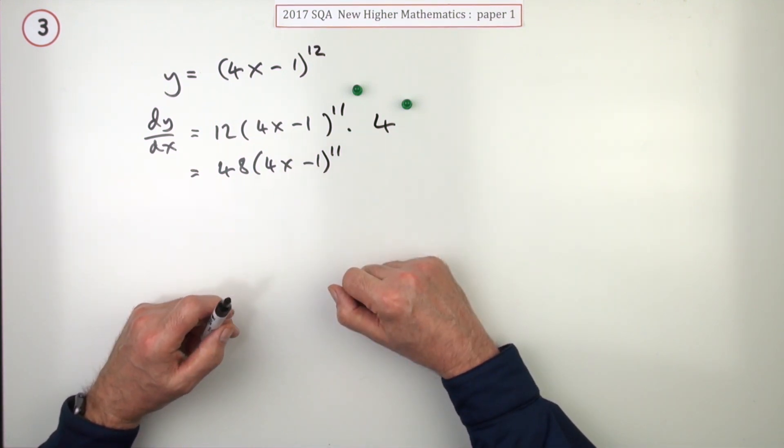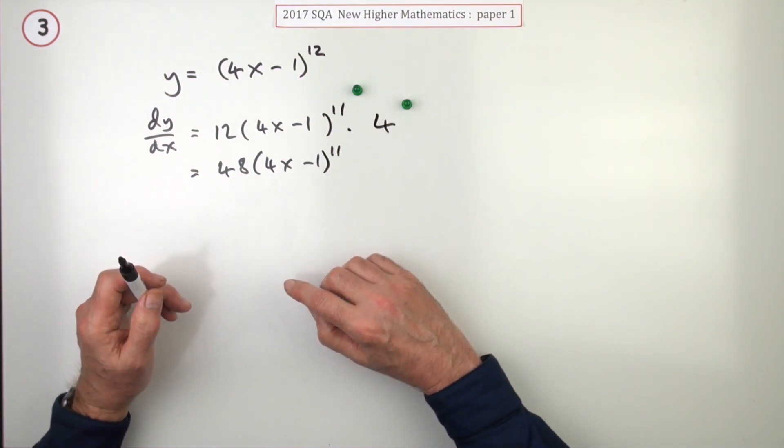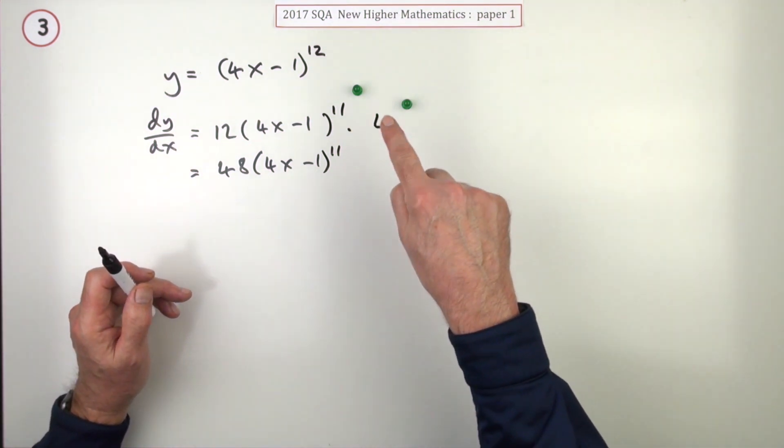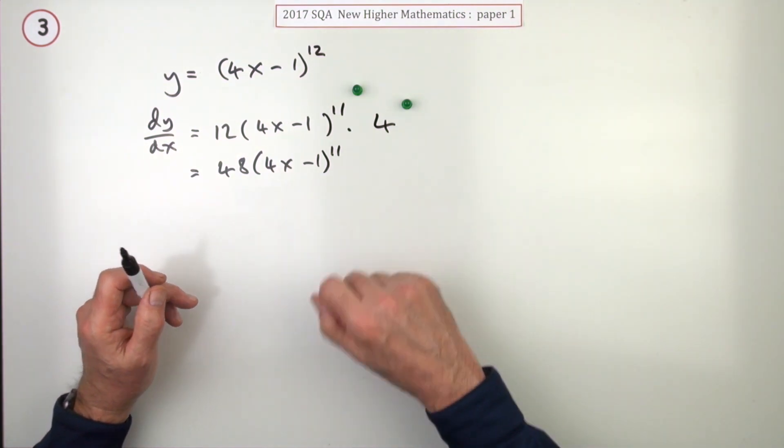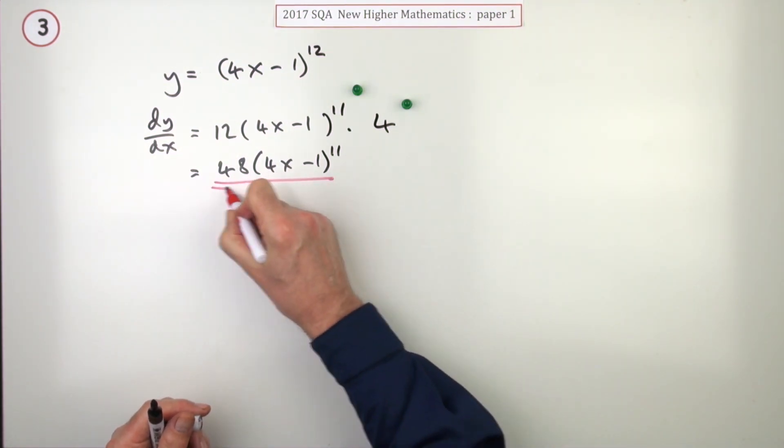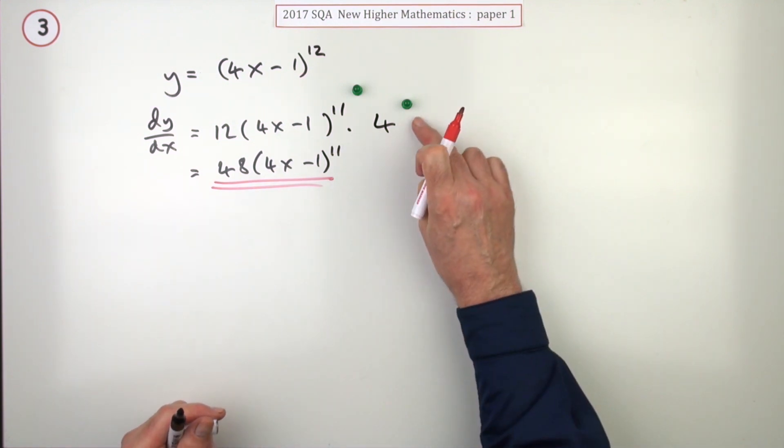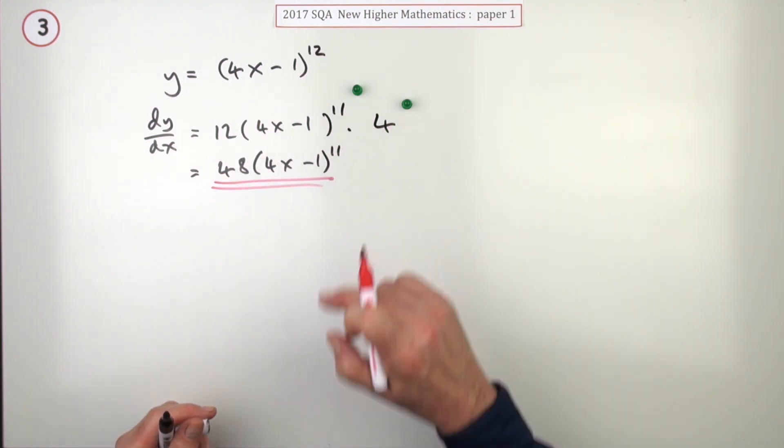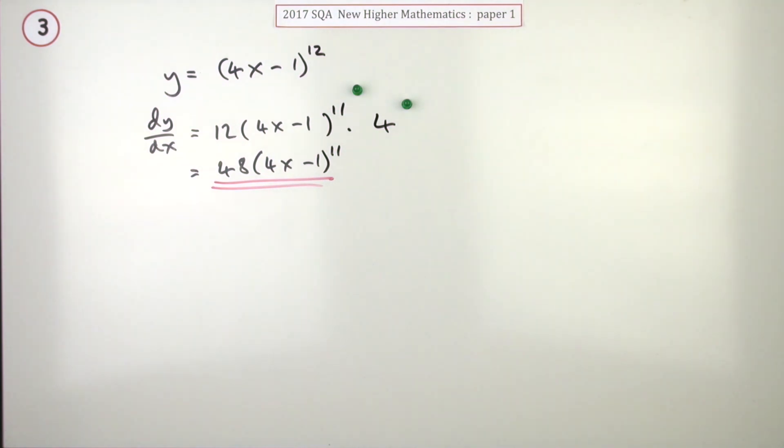There's been plenty of times in the past when it said the final marks for multiplying and simplifying the answer. In this case, however, you didn't need to go as far as this. You'd have got two marks if you left it. There's a 12 there and a 4 there.